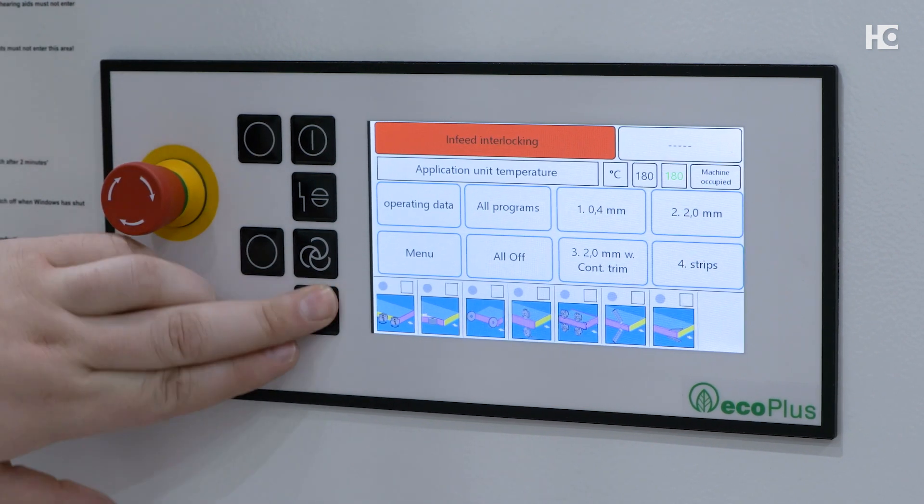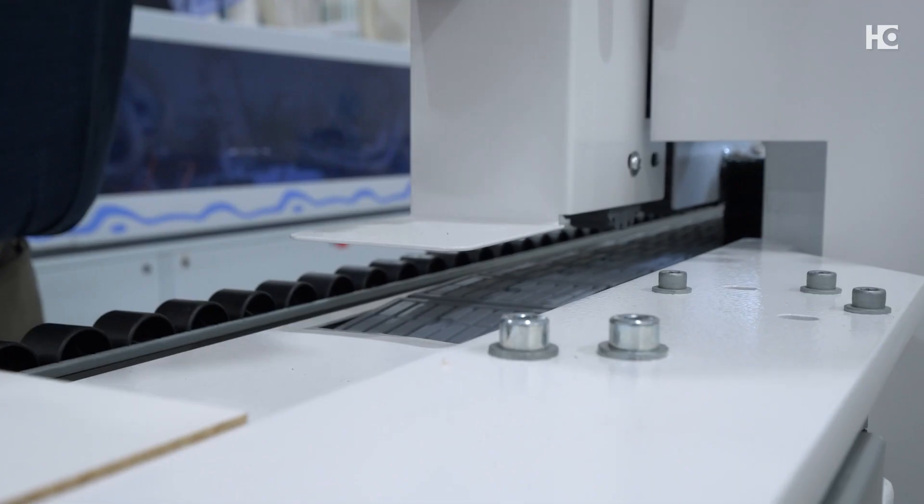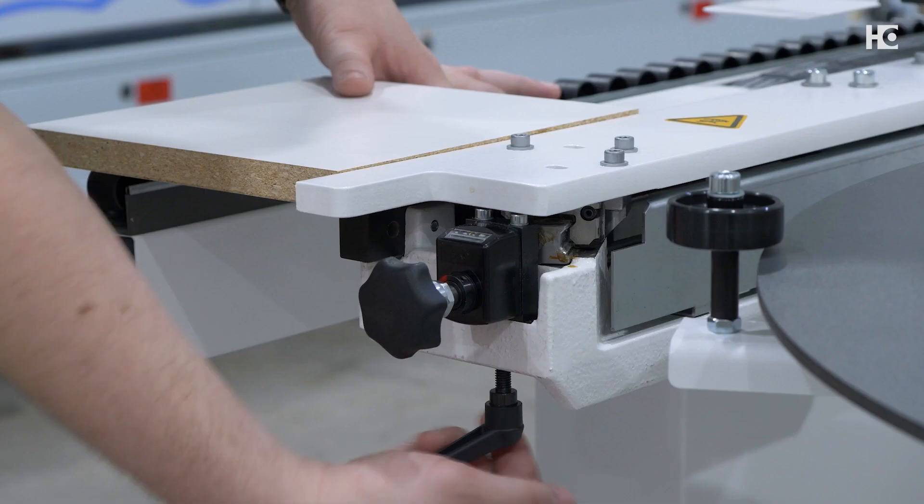Six short stroke keys make it easy and quick to operate power, feed track, and heat up the glue pot. The pressure beam can be manually raised up to 40 millimeters.